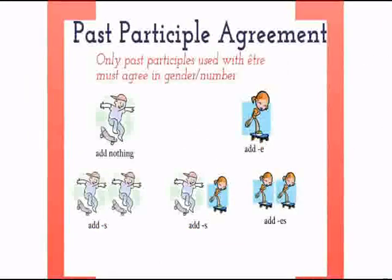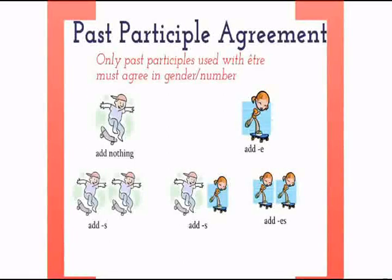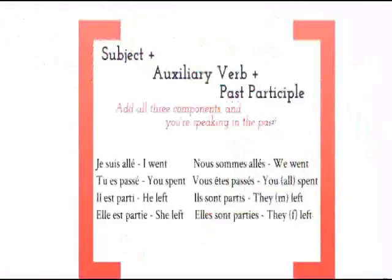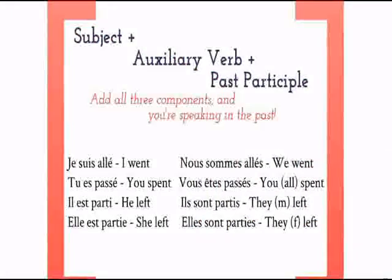One important difference between using Être and Avoir as the auxiliary verb: past participles formed with Être must agree in gender and number with the subject, just like adjective agreement. Plural subjects require the addition of an S, while feminine subjects call for an additional E.